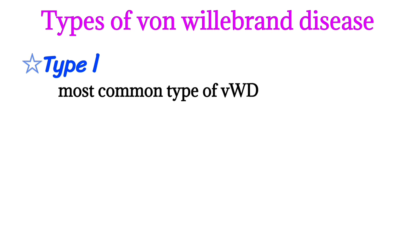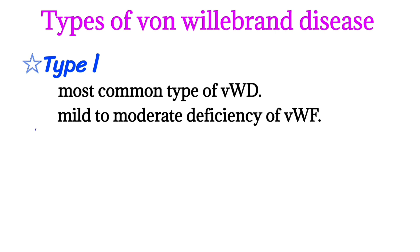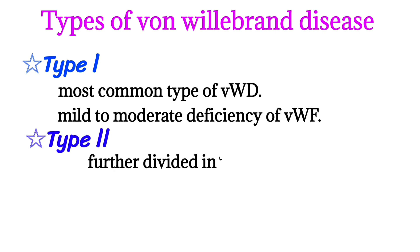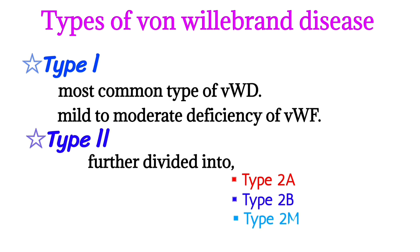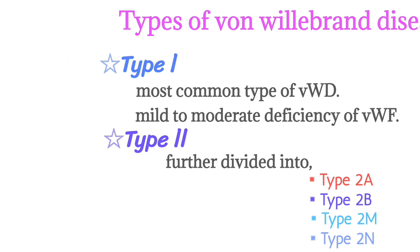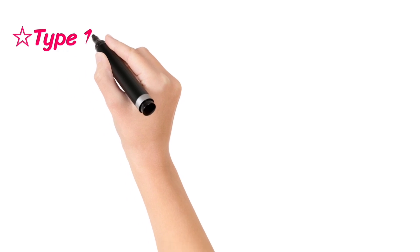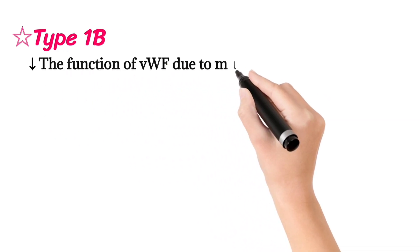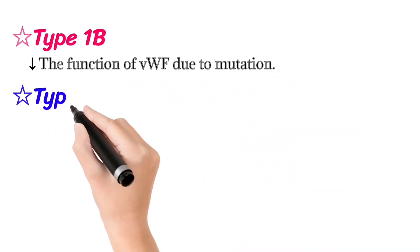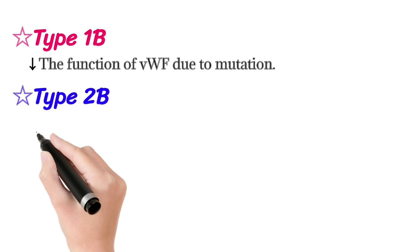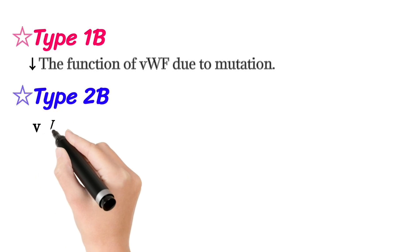Types of von Willebrand disease: Type 1 is the most common type, presenting with mild to moderate deficiency of von Willebrand factor. Type 2 is further divided into Type 2a, Type 2b, Type 2m, and Type 2n. Type 2a decreases the function of von Willebrand factor due to mutation. Type 2b von Willebrand factor has increased affinity to platelets, leading to clumping and decreased platelet count.